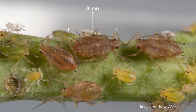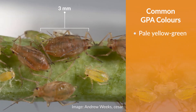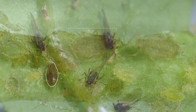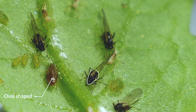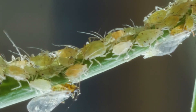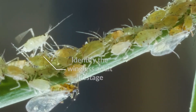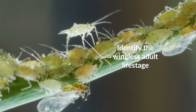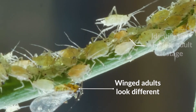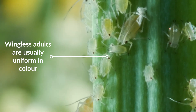The green peach aphid grows up to 3mm long. The most common colours are shiny pale yellow green, green and orange to pink. Adults are oval shaped and can be winged or wingless. When trying to morphologically identify green peach aphid, it is best to use a wingless adult, as the features of nymphs are not fully formed and winged adults look quite different, while wingless adults are usually quite uniform in colour.